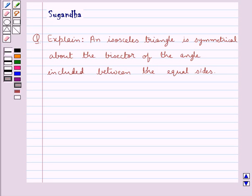Hello and welcome to the session. In this session we discuss the following question: Explain why an isosceles triangle is symmetrical about the bisector of the angle included between the equal sides.